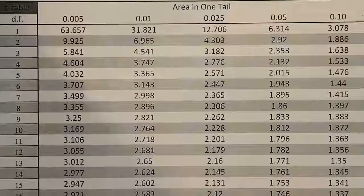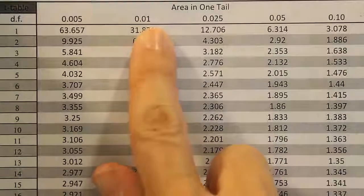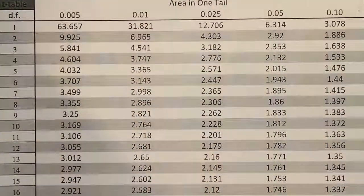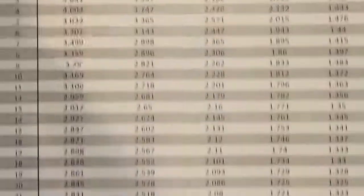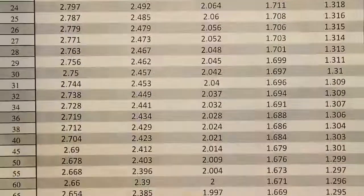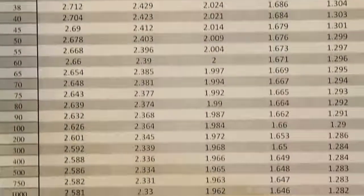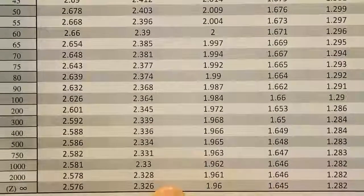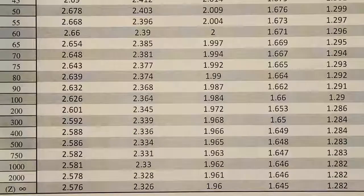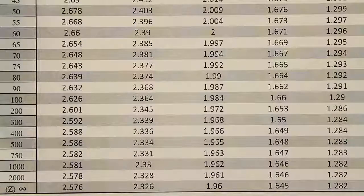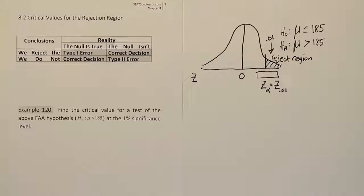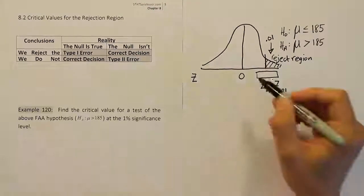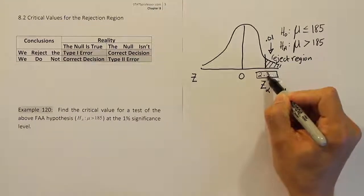Okay, so I'm at my t-table, and I'm looking up .01 in one tail, and I'm going all the way to the bottom until we get to where we have the z-value. And if we go all the way to the bottom, we see that it's 2.326. After looking at the table, we find the value 2.326.